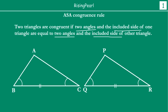So it means that if we have two triangles — triangle ABC and triangle PQR — if angle B is equal to angle Q, angle C is equal to angle R, and side BC is equal to QR, then if these three conditions are met, we can say that these two triangles are congruent — one triangle will exactly and completely cover the other triangle.